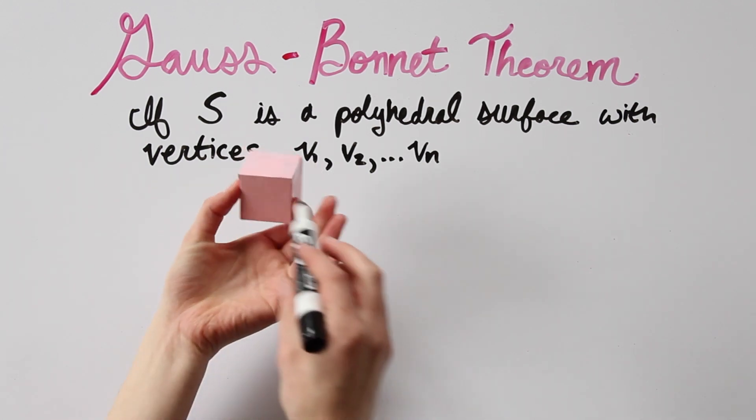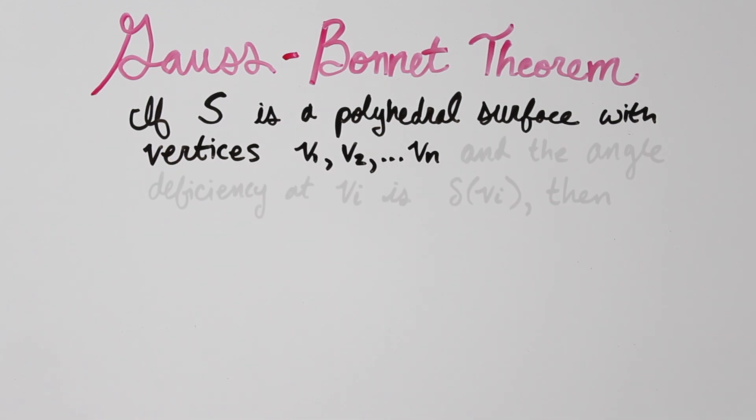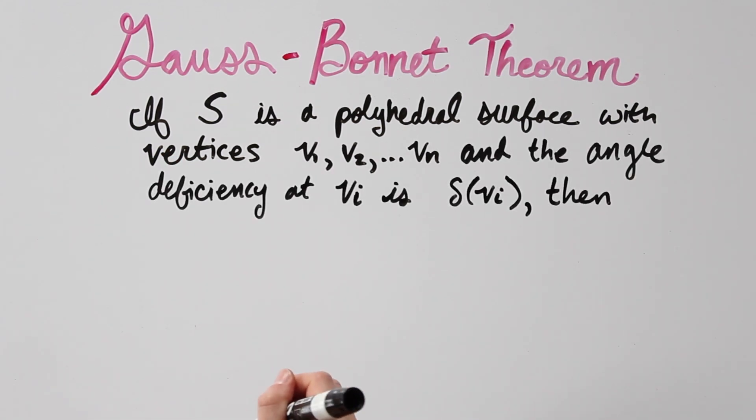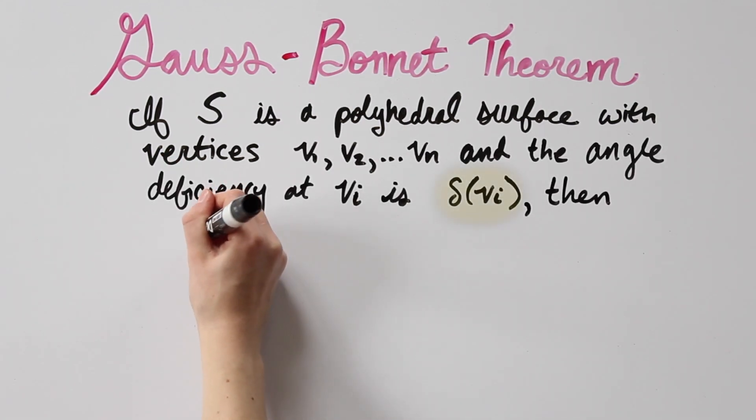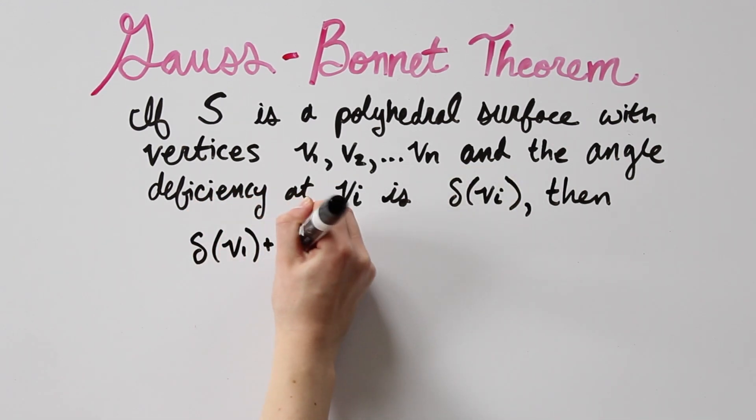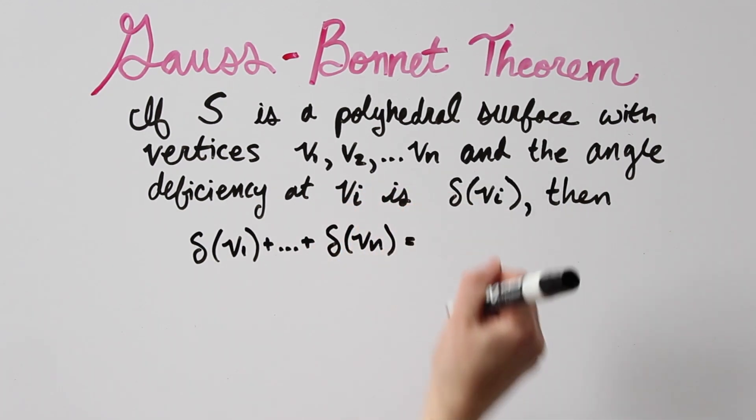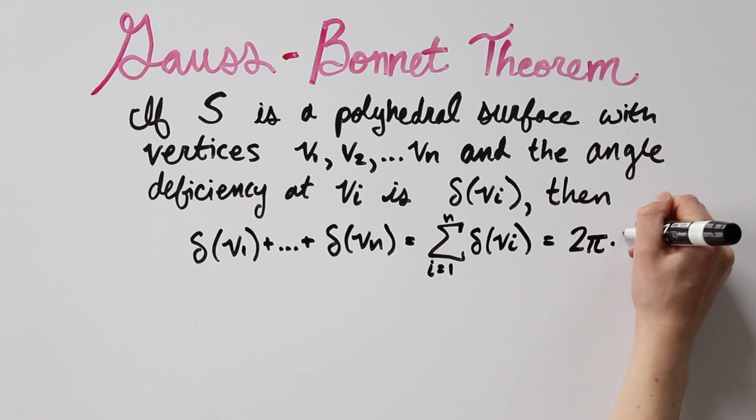If we have a polyhedral surface S, so a surface divided into polygons, that has vertices v1, v2, up to vn, with angle deficiency delta of vi at each vertex, then when we sum up the angle deficiency at every vertex, we will get 2 pi times the Euler characteristic of the surface S.